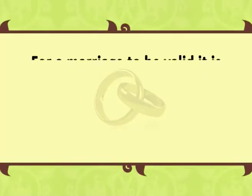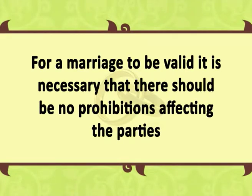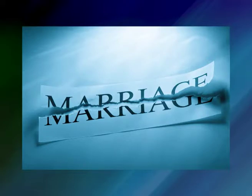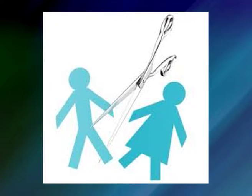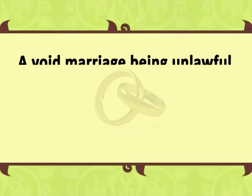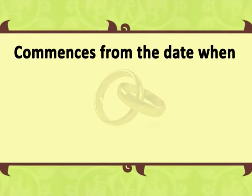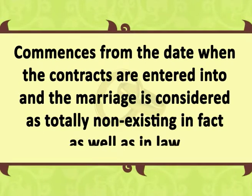Valid marriage: a marriage which conforms in all respects with the law is termed Sahih i.e. correct. For a marriage to be valid, it is necessary that there should be no prohibitions affecting the parties. Prohibitions may be perpetual or temporary. If the prohibition is perpetual, the marriage is void; if it is temporary, the marriage is irregular. Void marriages: a marriage which has no legal results is termed Batil or void. A marriage forbidden by the rules of blood relationship, affinity or fosterage and some other prohibited marriages are void. The issue of a void marriage is illegitimate. A void marriage produces no mutual rights and obligations between parties. The illegality of such unions commences from the date when the contracts are entered into and the marriage is considered as totally non-existing in fact as well as in law.